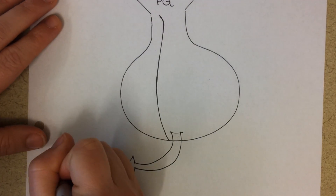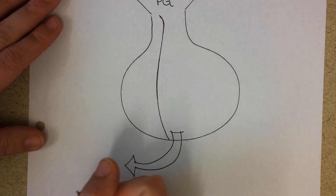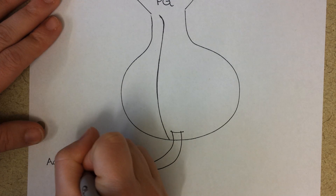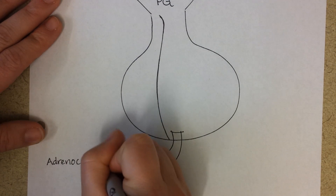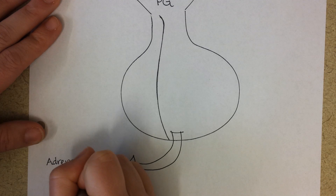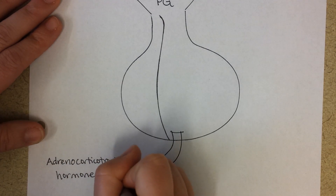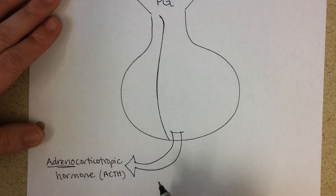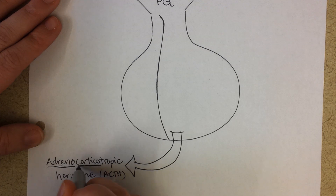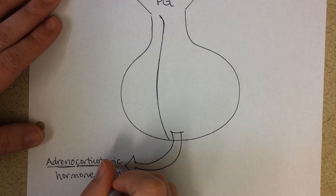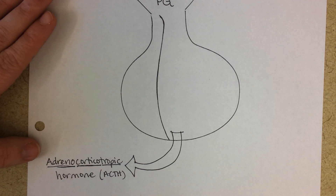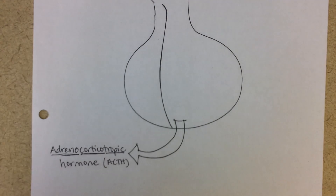First is ACTH, adrenocorticotropic hormone. Adreno means it's going to target the adrenal gland. Cortical means it's going to target the cortex, or the outer part of the adrenal gland. And tropic means it's going to make the cortex of the adrenal gland release hormones.